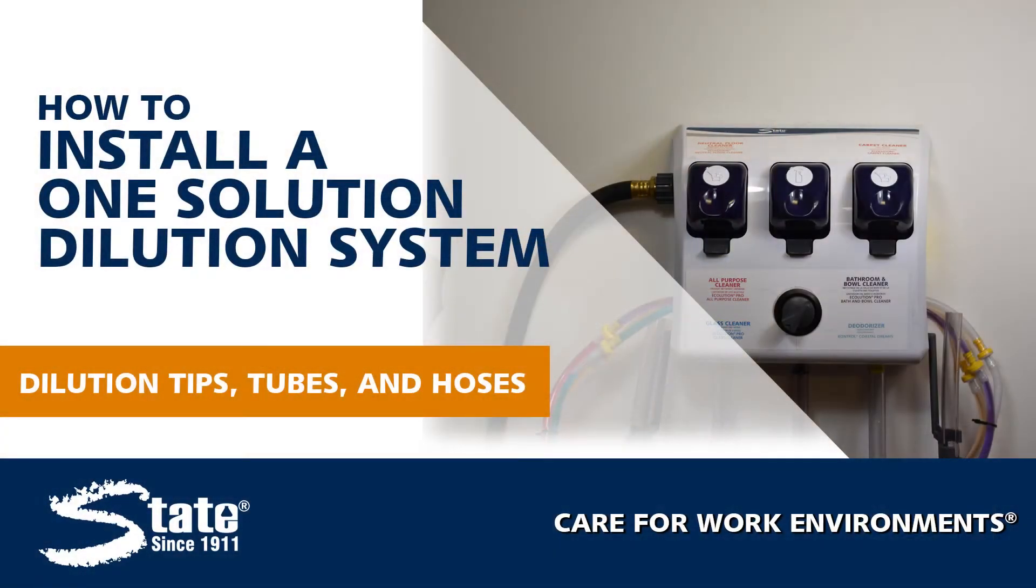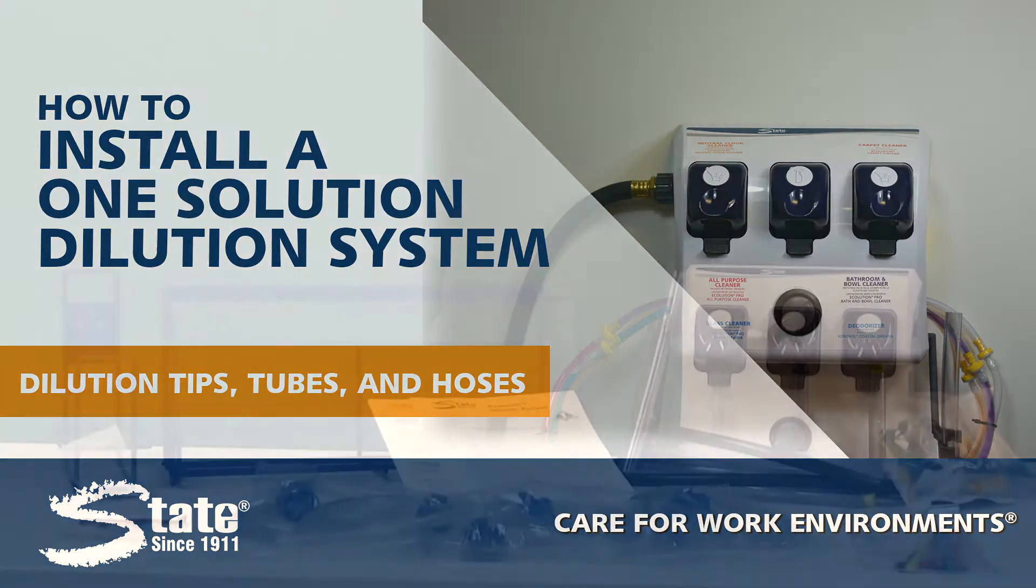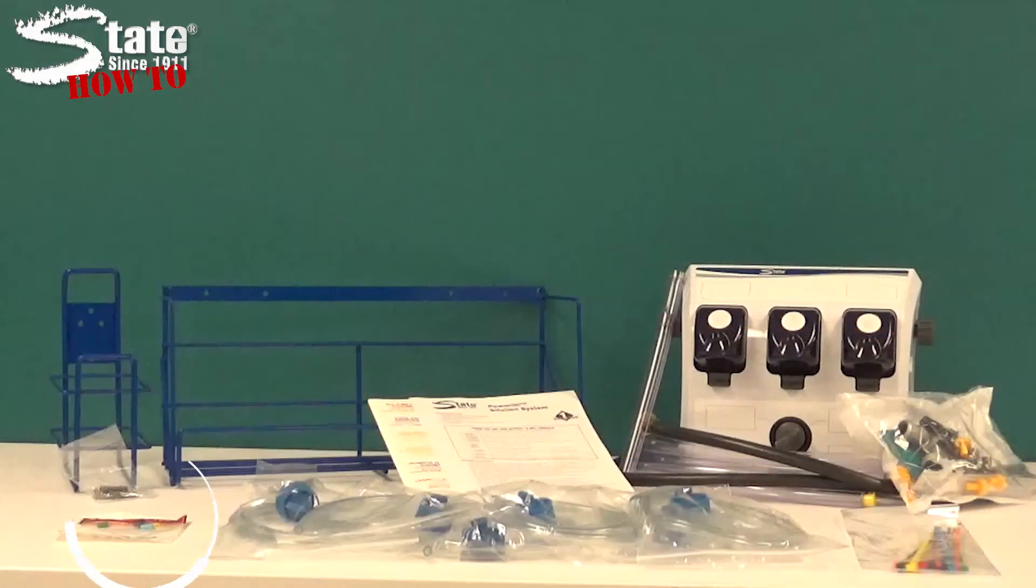You are now ready to begin inserting dilution tips as well as hooking up hoses and tubes. We will now insert dilution tips into the One Solution system, then hook up dispensing hoses and chemical feed tubes. You will need the little bag of color-coded dilution tips, the small feed tubes, and the large dispensing hoses as well as a tube cutter.